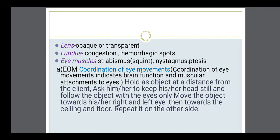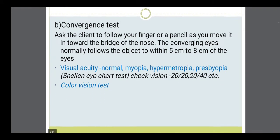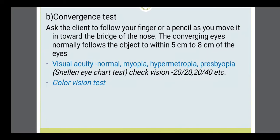Then the lens — whether opaque or transparent. An older person may have a lens that gradually becomes opaque because of cataract. Then the fundus, examined with the help of an ophthalmoscope — check if congestion or hemorrhagic spots are present. Then eye muscles — strabismus means the person is having squint, nystagmus, or orthosis. Then coordination of eye movement, which is an important neurological function. Hold an object at a distance like a pen, ask the patient to keep their head still and follow the object with the eyes. Move the object towards the right and left, then towards the ceiling and floor. Repeat to the other side. Also do the convergence test — move a finger toward the bridge of the nose; the eyes normally follow the object to within 5 to 8 cm.